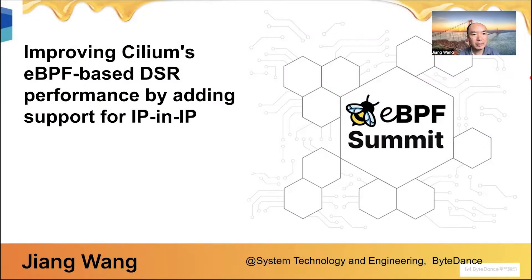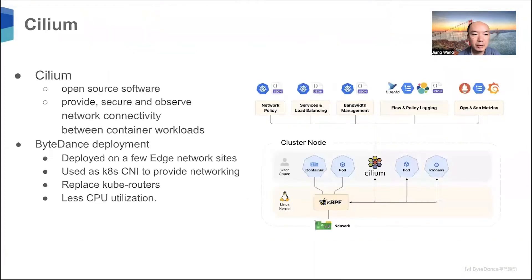Hello everyone, my name is Jiang. Today I will present improving CDIM's EBPF-based desktop performance by adding support for IP-in-IP from Beddance. CDIM is open source software that provides secure and observable network connectivity between container workloads. At Beddance, we deploy CDIM on a few edge network sites and use it as a Kubernetes CNI to provide networking and replace the Kubernetes router, because CDIM has less CPU usage.